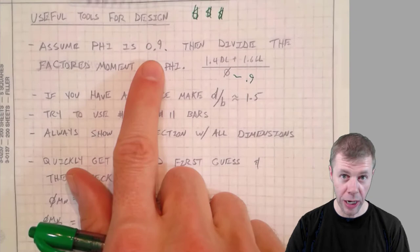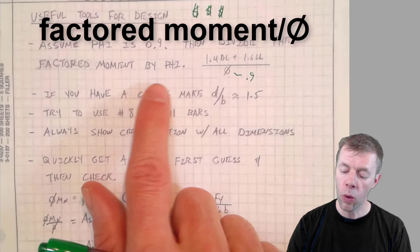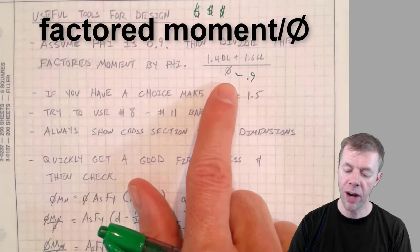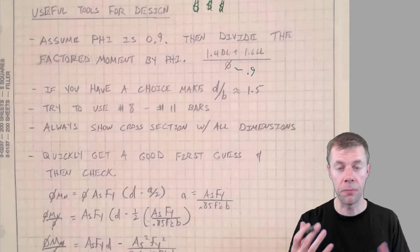So if we assume 0.9, we'll check it at the end—don't worry—we're going to divide this factored moment, whatever our load is, whatever our moment is, all by the phi factor. Now if we have dimensions of a beam already given for us, that's awesome, but sometimes we don't—sometimes we've got to pick them out for ourselves.